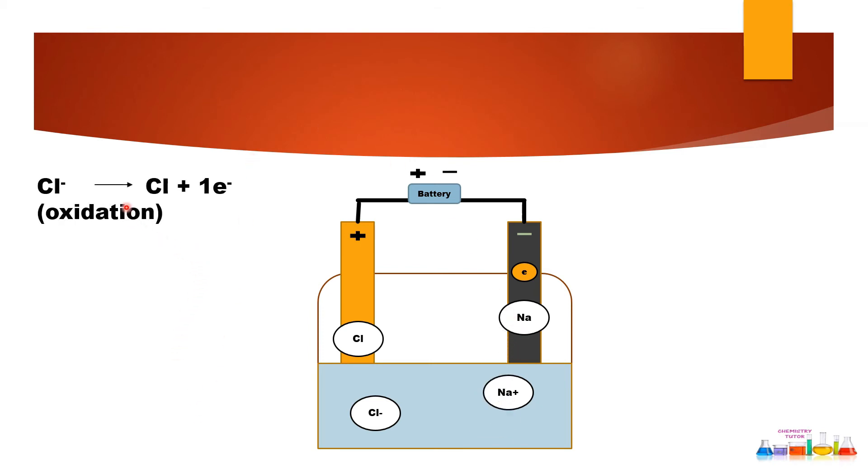Chlorine at anode, oxidation is occurring. Oxidation means loss of electron. So chlorine is basically losing its one electron at anode. At the same time what is happening at cathode? Reduction. Reduction means gain of electron. So sodium ion is gaining one electron of chlorine and it is becoming sodium atom.